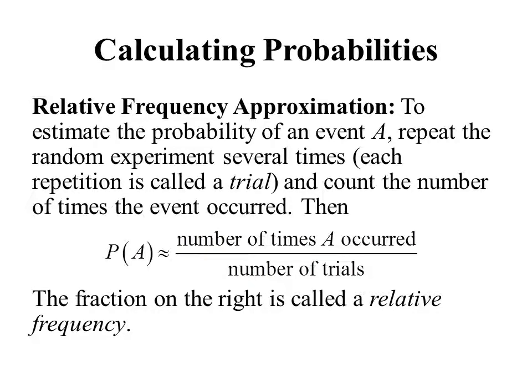Now we're going to talk about three ways of calculating probabilities. The first is what we call a relative frequency approximation. To estimate the probability of an event A, repeat the random experiment several times — each repetition is called a trial — and count the number of times the event occurred. The probability of A is approximately equal to the number of times the event occurred divided by the number of trials. This fraction is called a relative frequency. This is an approximation, and we'll illustrate why that is the case here in a bit.